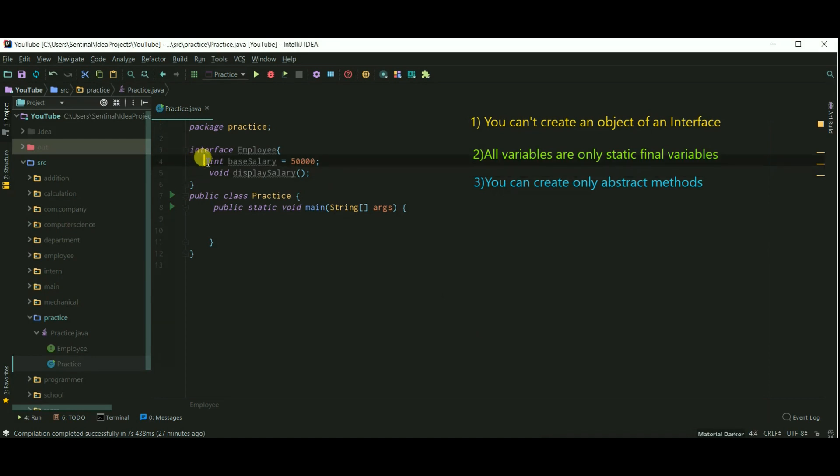We don't need to add the keyword static final and abstract but I am adding just to show you. Actually the IDE is showing that writing this keyword is redundant because compiler automatically adds this keyword. So let's remove this.